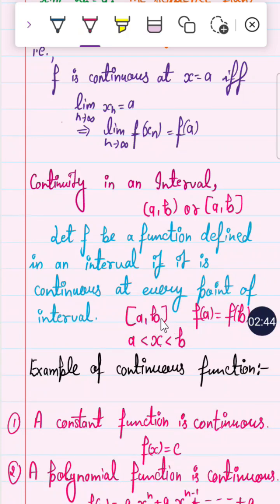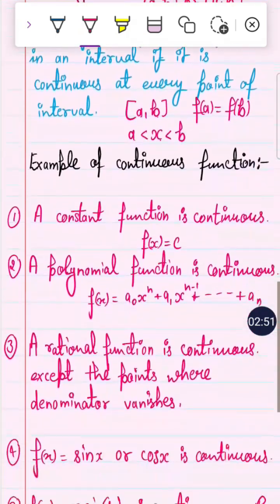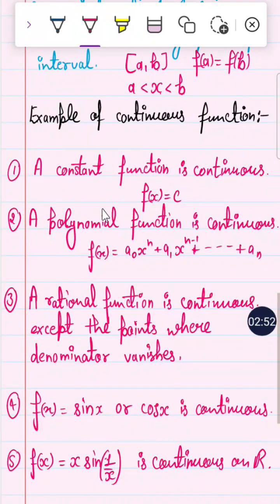If it is a closed interval, then the function must also be continuous at the endpoints a and b. Examples of continuous functions include the constant function. A polynomial function is always continuous, and a rational function is also continuous.